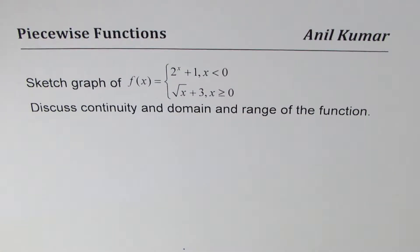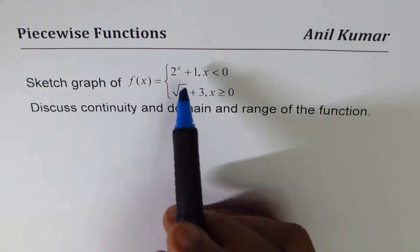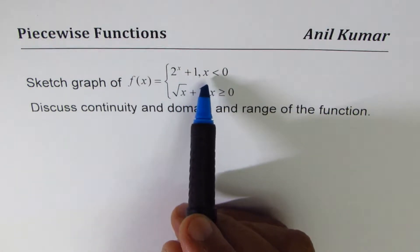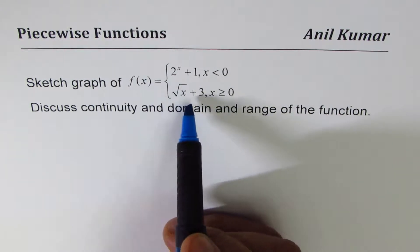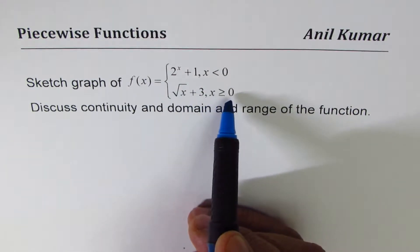I'm Anil Kumar sharing with you a test question on piecewise functions. The question here is sketch the graph of f(x) equals 2 to the power of x plus 1 when x is less than 0, and square root of x plus 3 when x is greater than or equal to 0.